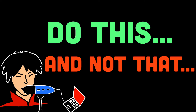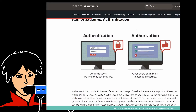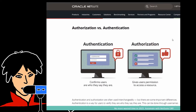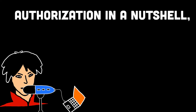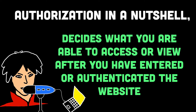Authorization ensures that users can only do what they're permitted to do within the website or app. It helps protect sensitive data and resources by restricting access to authorized individuals. In simple terms, authorization in the backend is like the bouncer giving you a special stamp or access level after you have proven your identity. It determines which areas or actions you're allowed to access within a website or app based on your role or permissions.